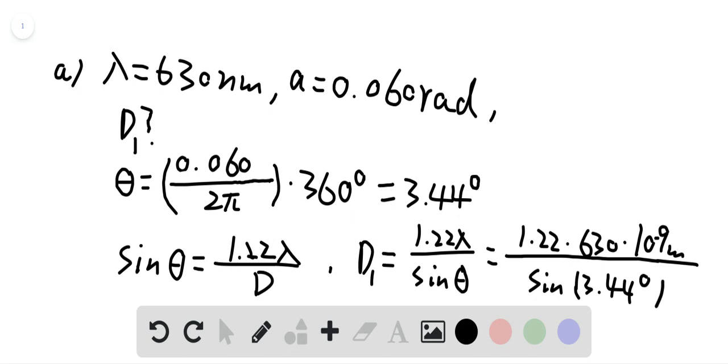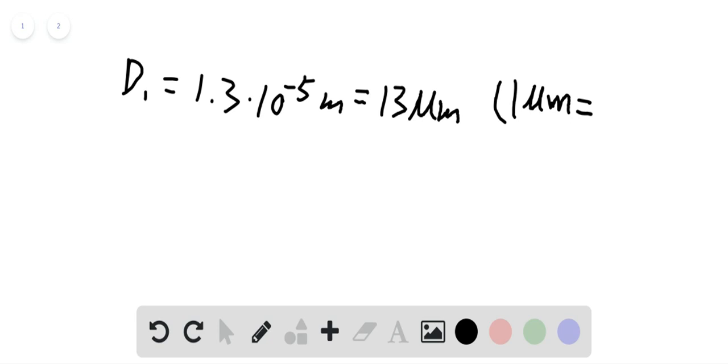Okay, and let's go to the second page to illustrate the questions. So d1 will be equal to 1.3 times 10 to the negative 5 meters, or if you want to convert to micrometers, it's 13 micrometers. And 1 micrometer is equal to 10 to the power of negative 6 meters.